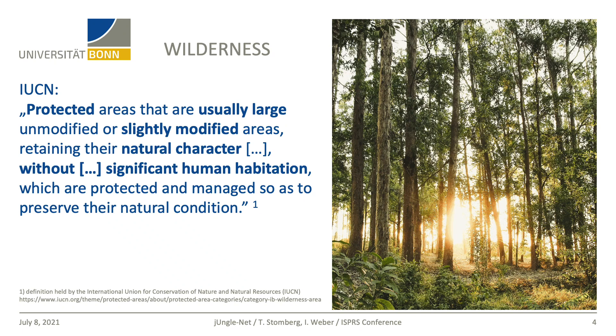There are multiple definitions, and one of them is held by the International Union for Conservation of Nature, short IUCN. But this definition of wilderness is actually not clear at all — usually large, slightly modified areas without significant human limitation. These are no numbers you can easily assign. What does 'retaining their natural character' actually mean? And then there's 'protected' — so are unprotected areas that fulfill all the other conditions not wild? To be honest, we are not so interested in constructed definitions. We want to deepen our understanding of what makes nature wild.